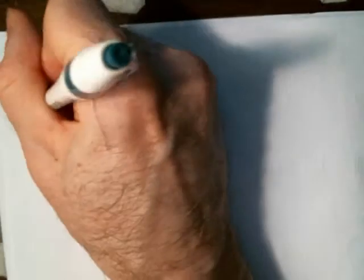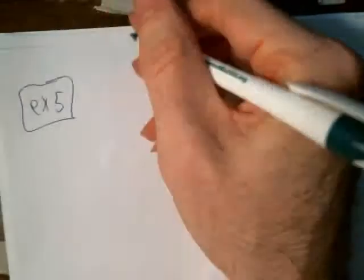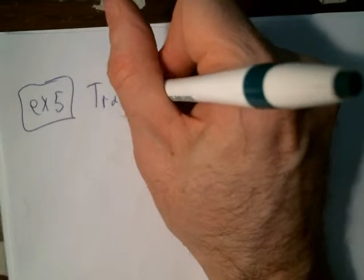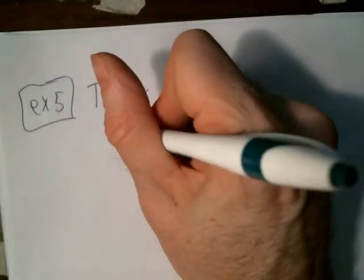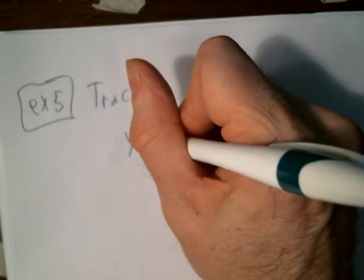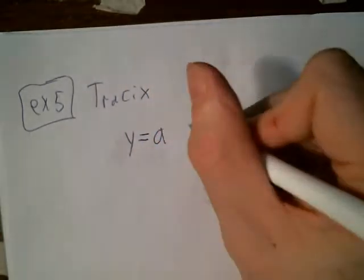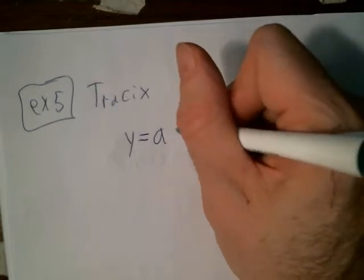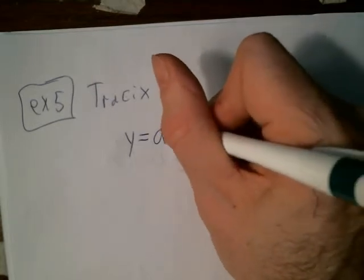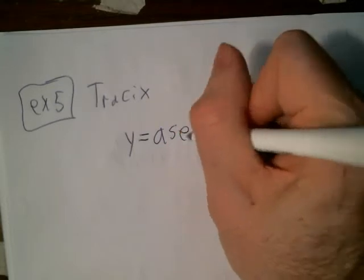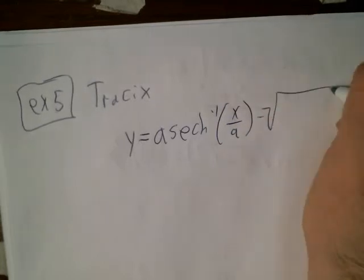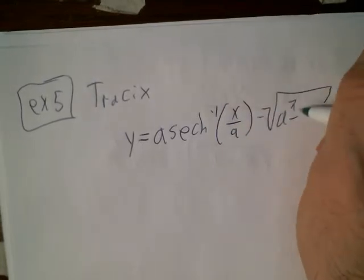These hyperbolic functions pop up when dealing with cables and similar physical problems. In the Tractrix problem, you're pulling a boat at the end of a rope, and you can model the curve traced out by the boat using y = a·sech⁻¹(x/a) minus √(a² - x²).